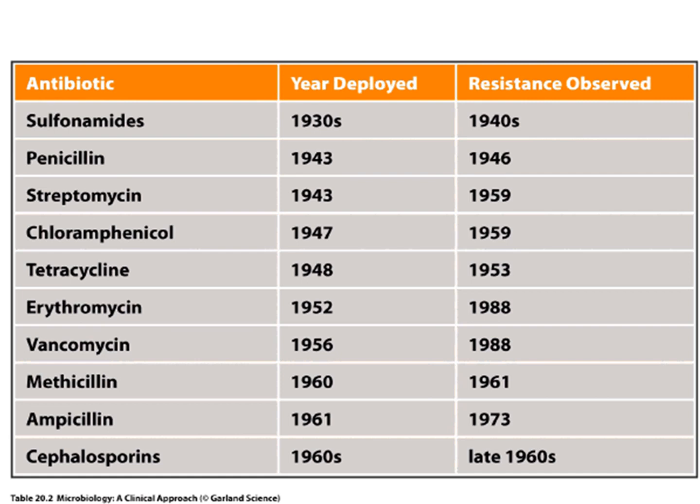Some antibiotics weren't used as often — like vancomycin, first used in 1956, but we didn't see resistance until 1988. The less you use an antibiotic, the less chance you have of selecting for resistant bacteria, so it takes longer to see resistance. Vancomycin was originally only available as an IV formulation used in hospitals, so it wasn't used often, and resistance took much longer to develop.